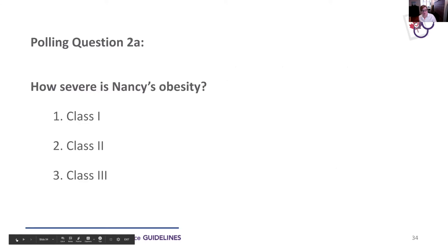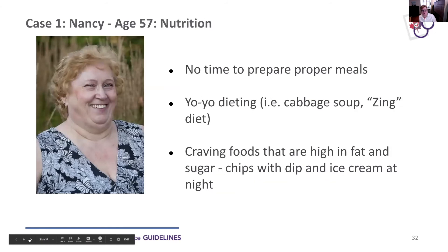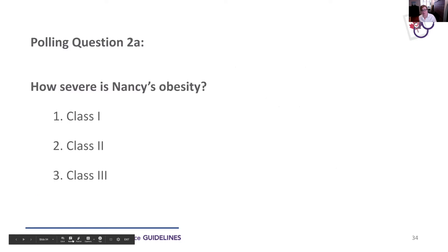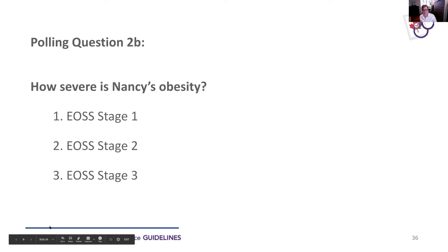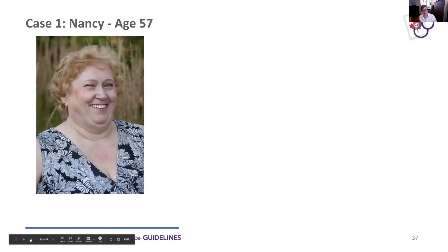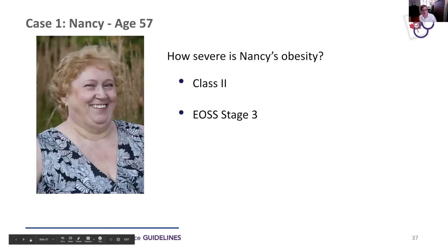Going back to Nancy — her BMI was 39.7. If you were assessing Nancy, where would you put her severity based on her BMI? She has established diabetes, which would mean it's not preclinical — so she would be at EOS two at least. For the people saying three, that's really the question: how impaired is she with that back pain? Her depression is currently doing well. The issue is just with the chronic back pain — how much dysfunction is she having? And that could tip her into a three. So class two, and then EOS stage two to three, depending.